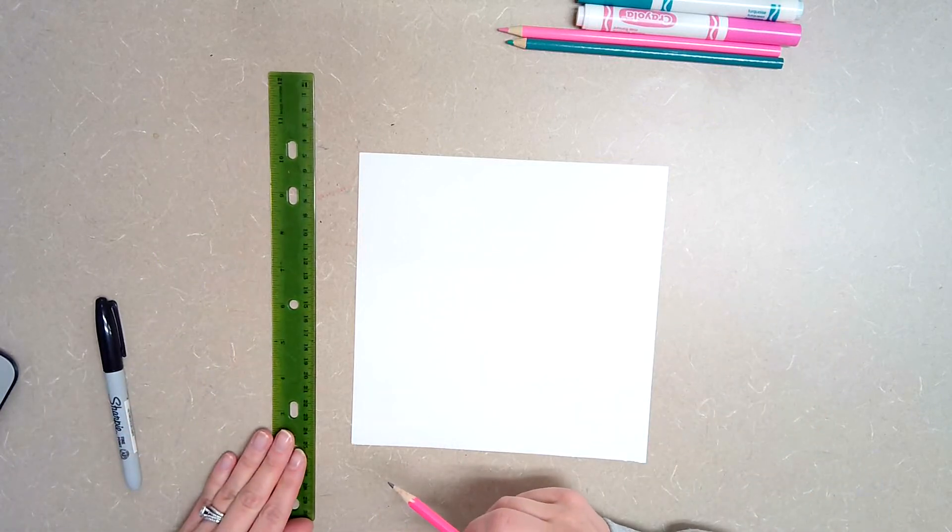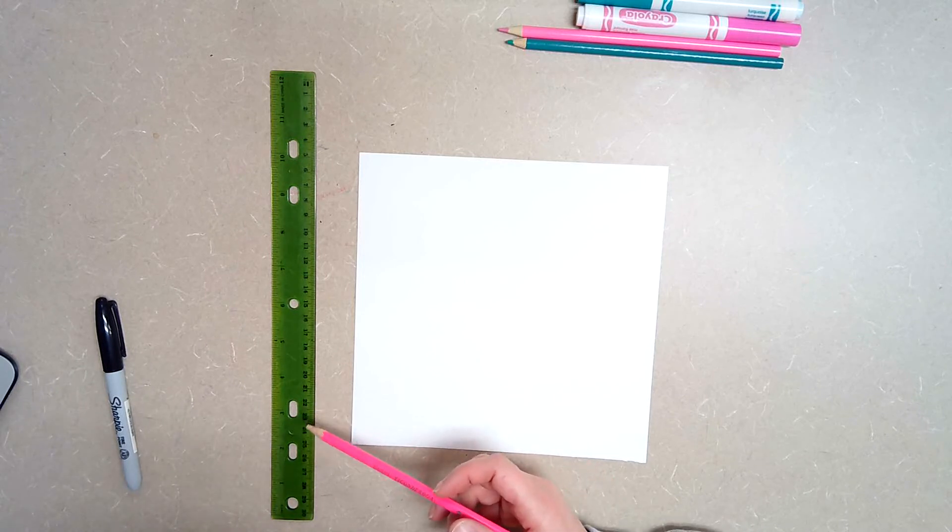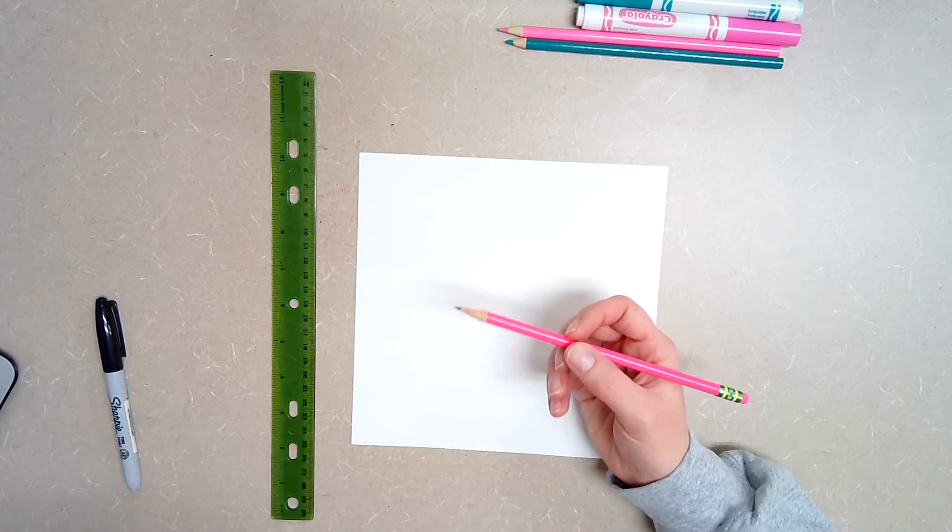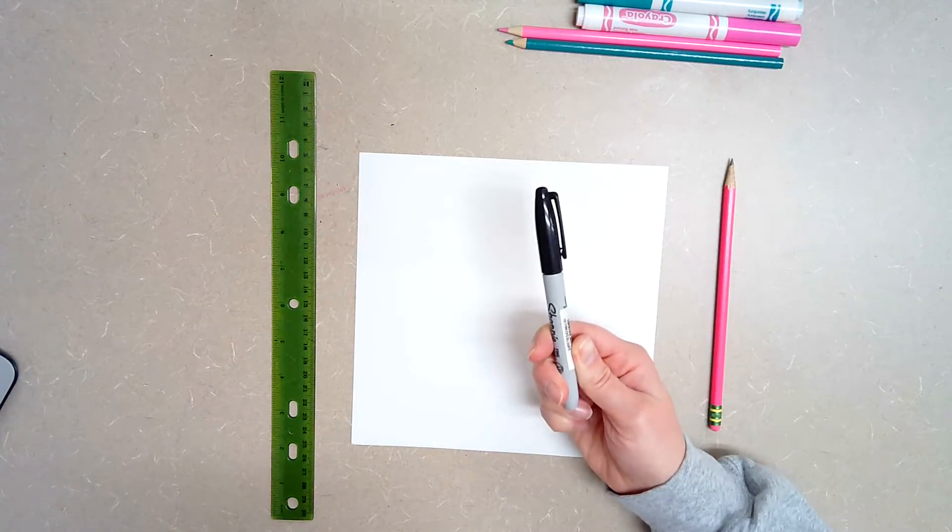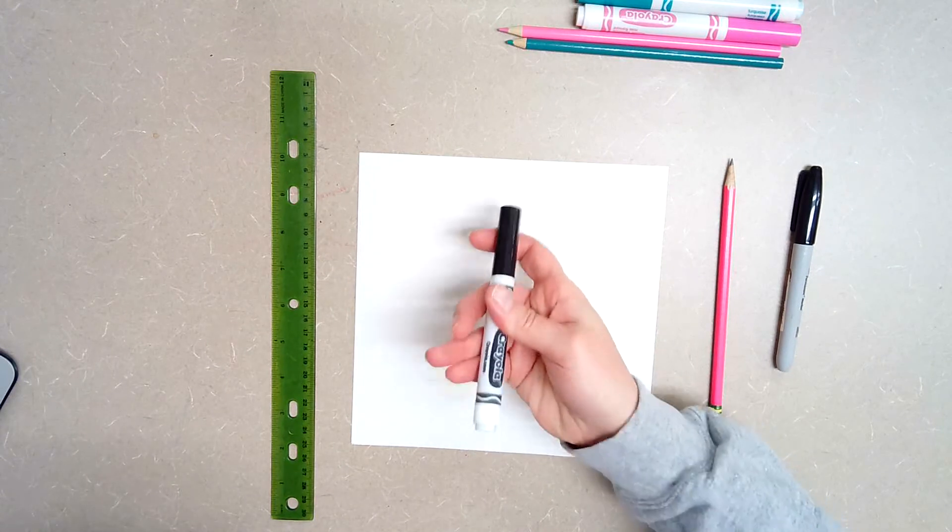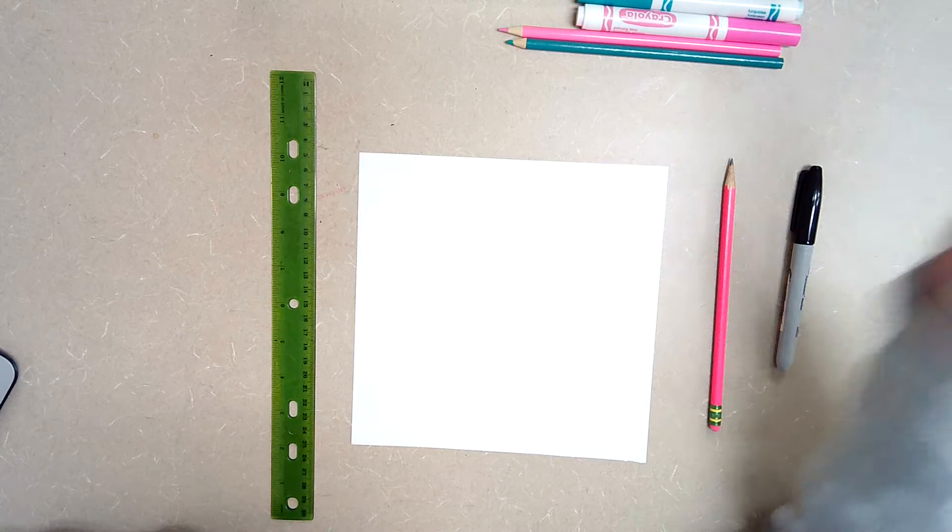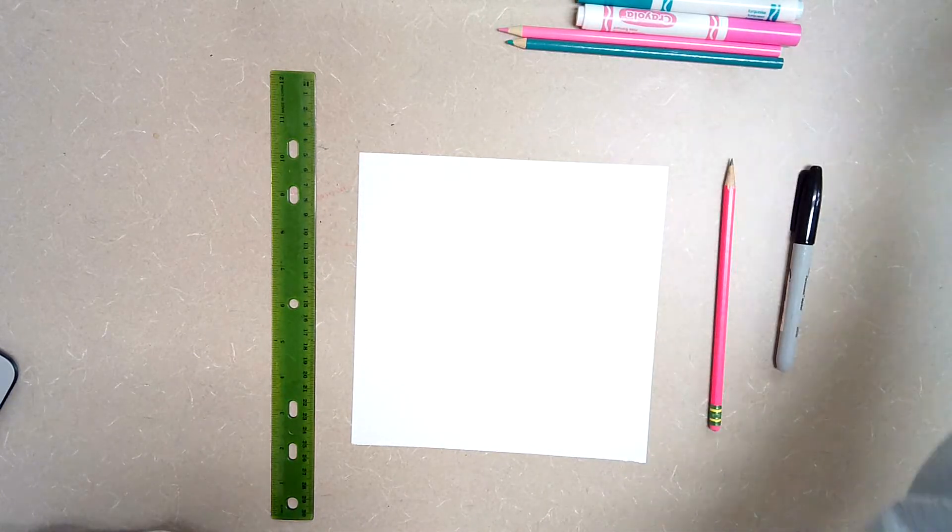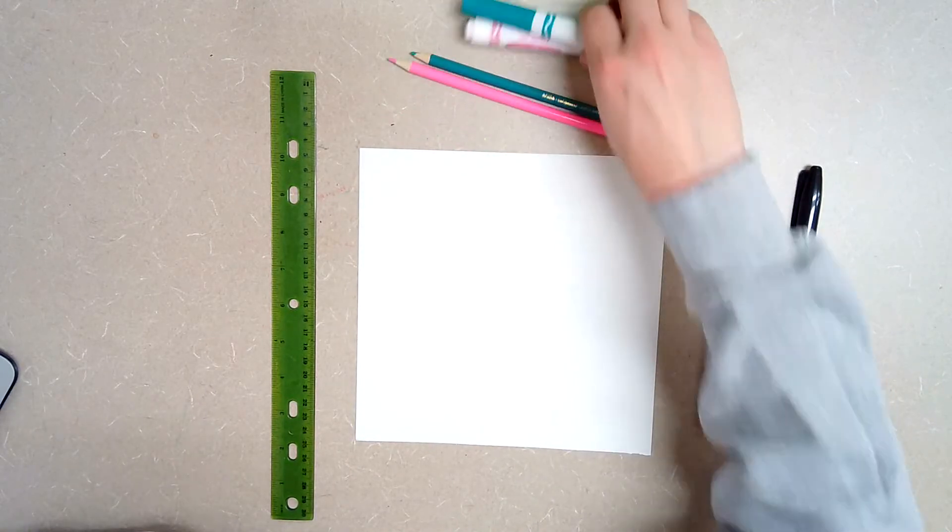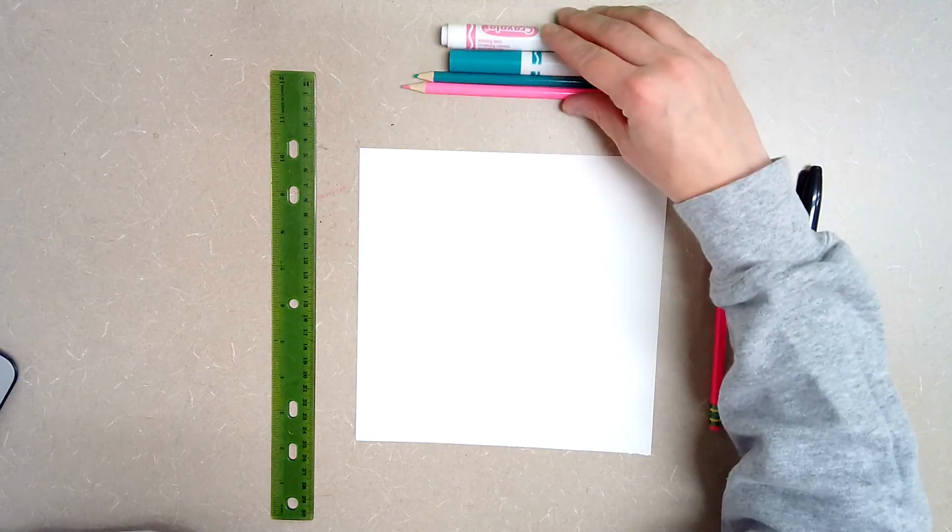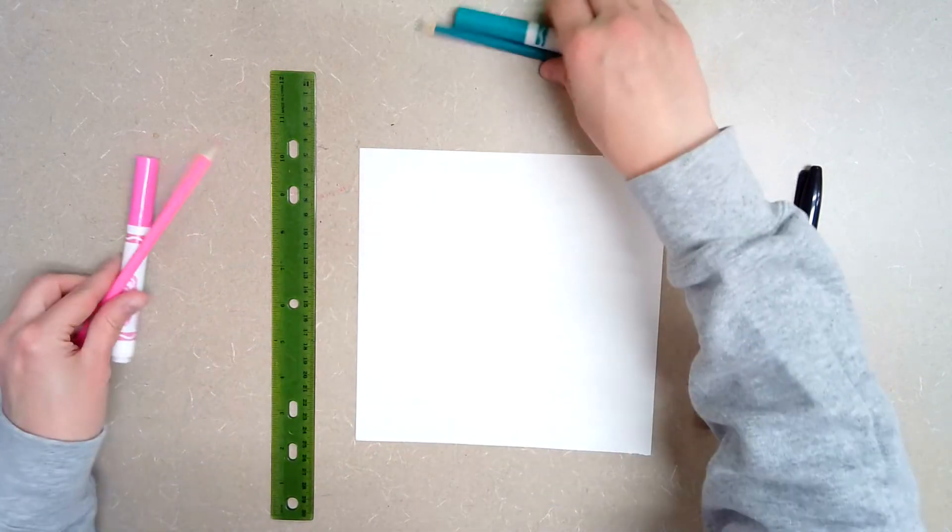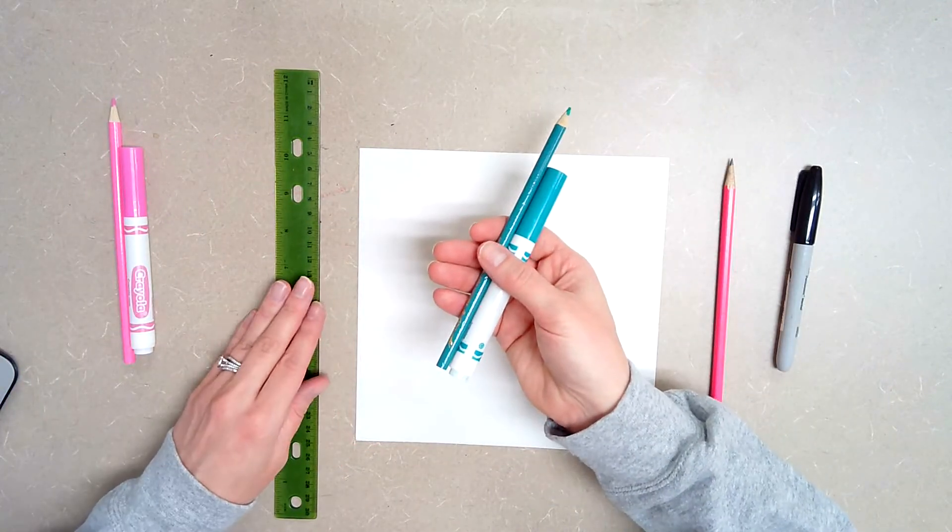You're also going to need a ruler if you have one. If you don't you can use the edge of a folder or the edge of a book. Just something that has a straight edge. You are also going to need a pencil and a black marker. If you don't have a black sharpie available to you, you can still use a regular black marker. If you don't have a black marker, then you can even use a black colored pencil to give you that nice outline. You are also going to need two colored pencils and two markers that match those colored pencils. So you can see here that I have a pink colored pencil and a pink marker and I have a blue colored pencil and a blue marker.